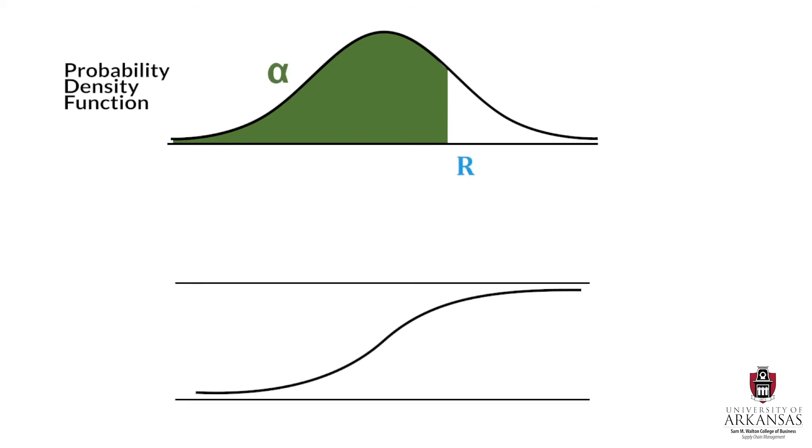The cumulative density function shown below is simply a different graphic representation of the same lead time demand distribution. What's important here is this: the area above this curve, to the right of the reorder point R, is what we call N of R, the expected stock out quantity per cycle. So the greater alpha, the further R moves to the right, and the smaller N of R becomes.